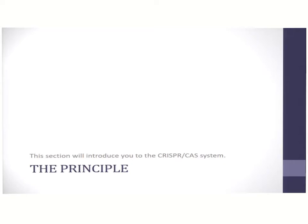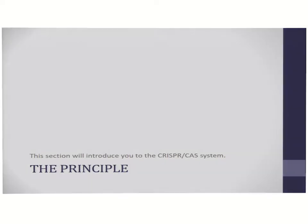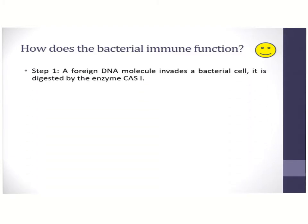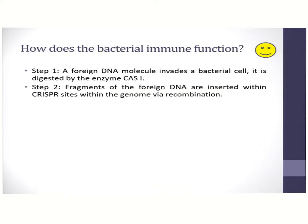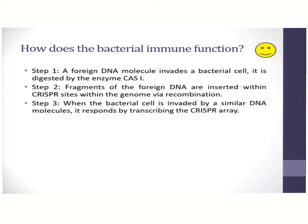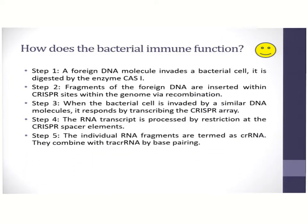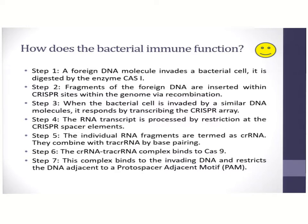Let us look back upon the principle of the Cas system as represented in bacterial genomes. When a foreign DNA invades a bacterial cell, it is digested by the enzyme Cas1. Fragments of the foreign DNA are then introduced into the CRISPR sites via recombination. When the bacterial cell is invaded by a similar DNA molecule, such as a phage DNA, the bacterial cell responds by transcribing the CRISPR array. The RNA transcript is processed by restriction at the CRISPR spacer elements. The individual RNA fragments, termed as crRNA, combine with tracer RNA by base pairing. The complex finally binds to enzyme Cas9, which in turn binds to the DNA adjacent to the protospacer adjacent motif and ensures its cleavage and degradation.